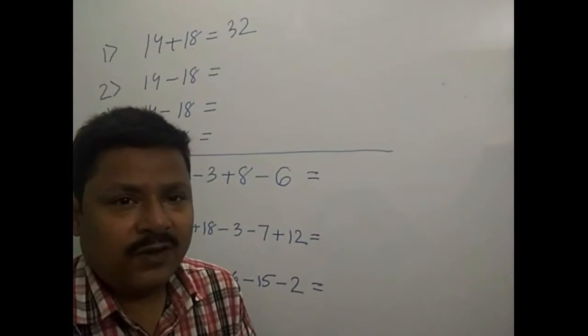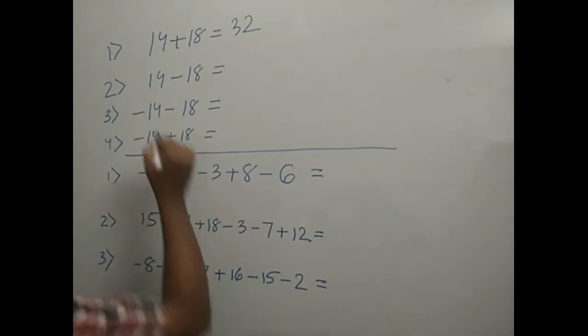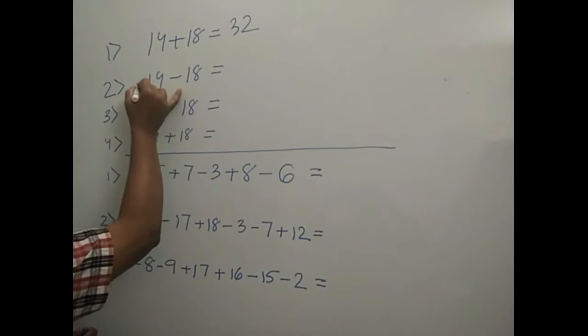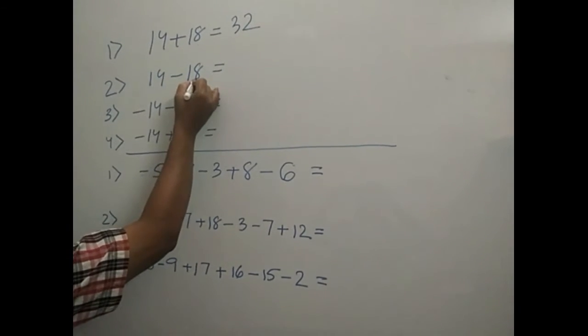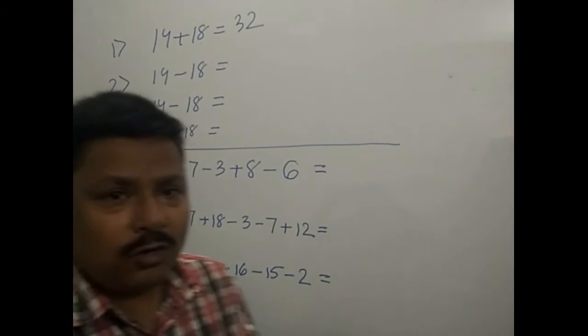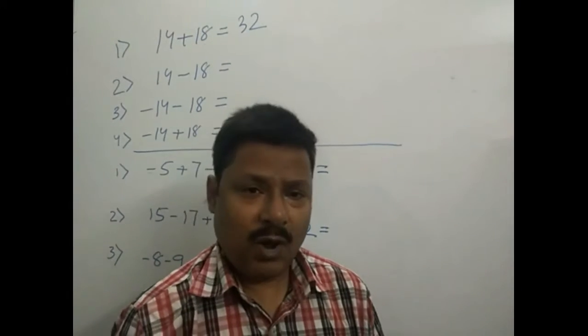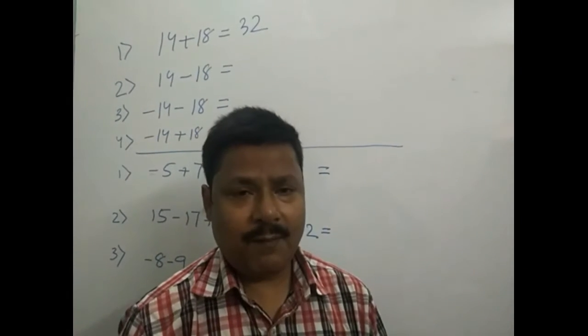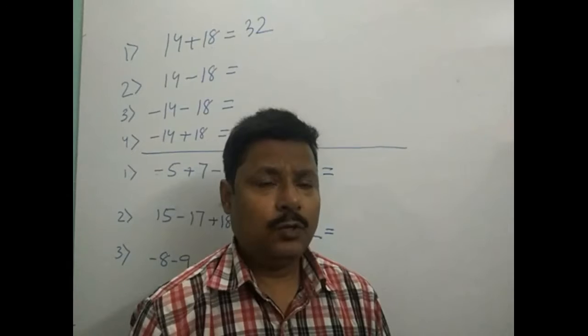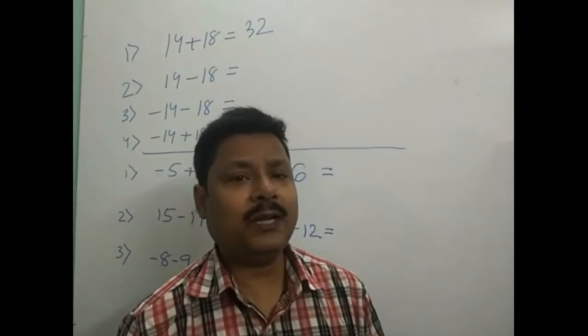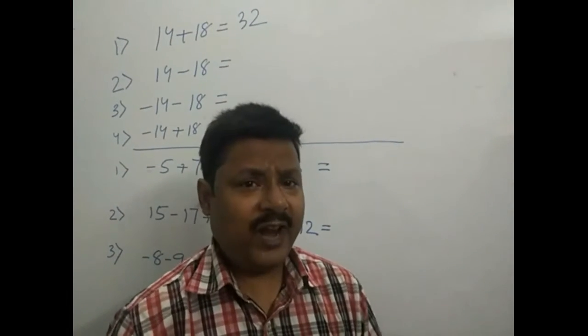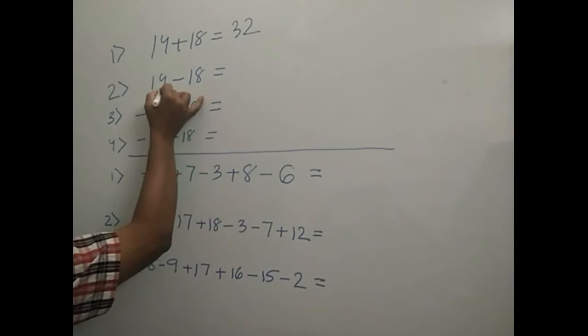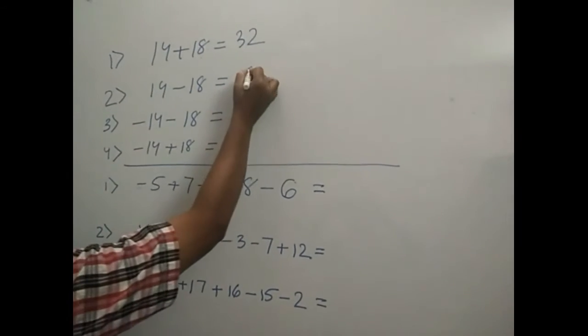Then, one positive, one negative. Plus 14, this is 14 means this is plus 14 minus 18. Now what you got to do, there is one plus number and one minus number, that is one negative number, one positive number. You got to find the difference between the two. 18 and 14, what is the difference? It is 4.